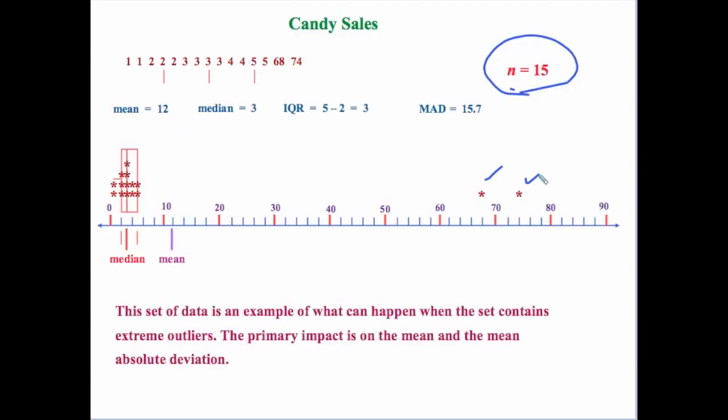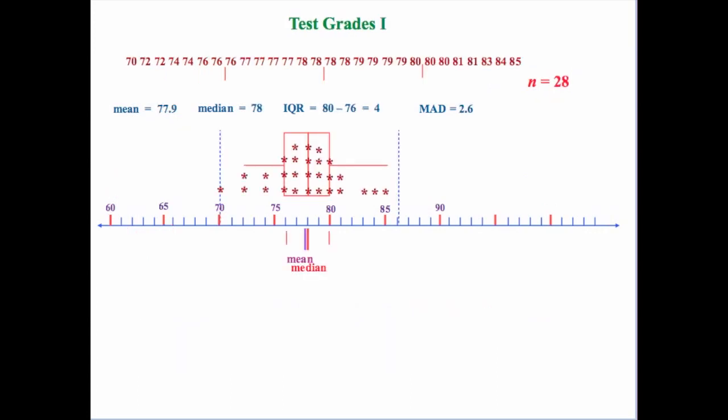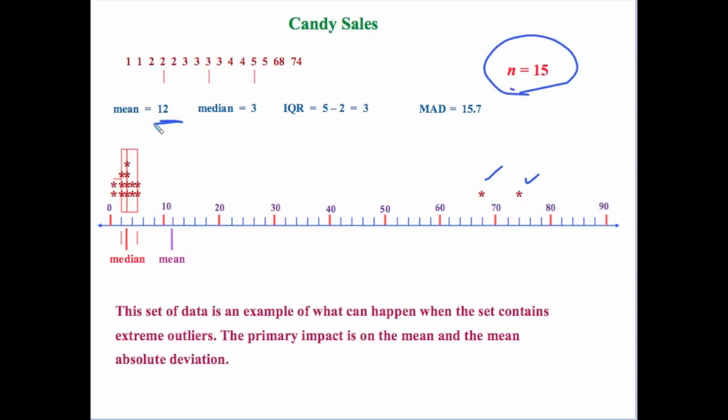Notice that the primary impact was on the mean and the mean absolute deviation. When we take the mean it comes out to be 12, making it look like our kids on average sold 12 boxes, when in fact most really sold closer to two or three. The median is a lot closer to the actual values we'd expect. And you have a small interquartile range — five minus two being three.